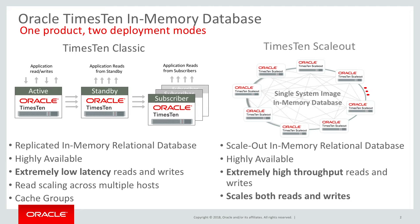X10 Scale-out is a brand new feature in 18.1. It is the biggest feature, the biggest change in X10's 20-year history. Basically, it is a scale-out, shared-nothing version of X10 that allows you to take a single database in-memory and distribute it across not just the memory of one machine, but across the memory of a large number of machines, providing a single system image that looks like a single database with no limitations.